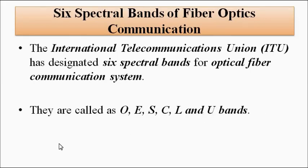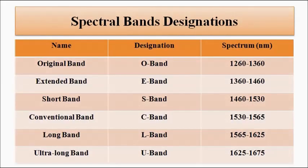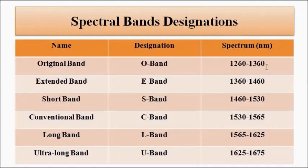Let us discuss the names and significance of each band along with their wavelength ranges. The O band is called the Original Band, and its wavelength range is from 1260 to 1360 nanometers.